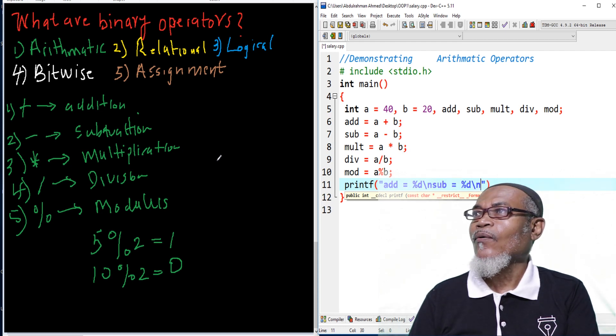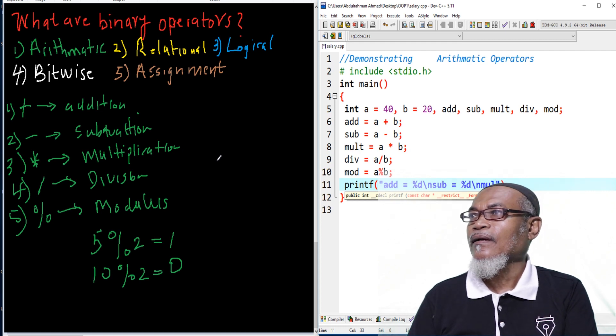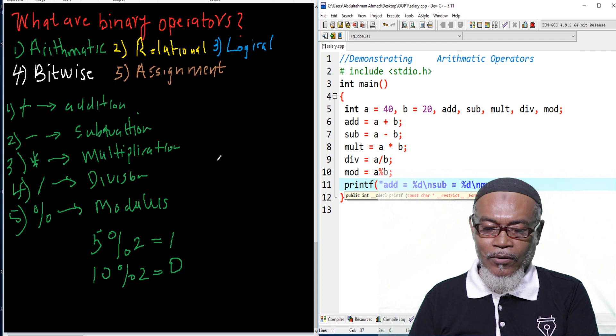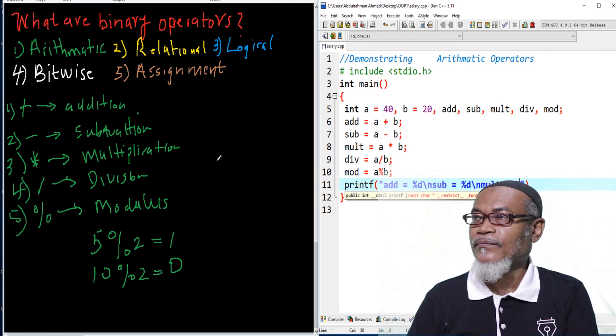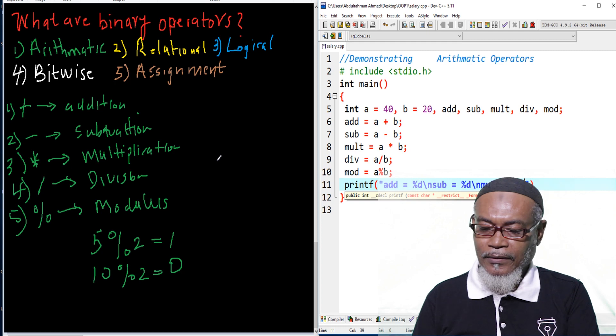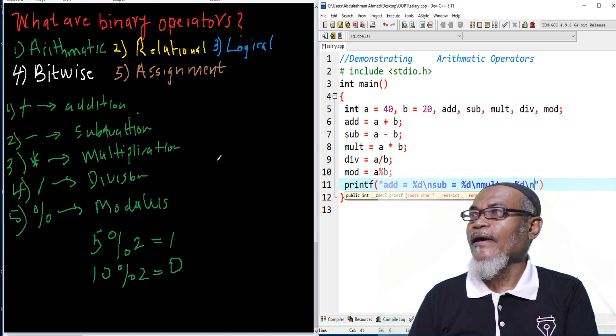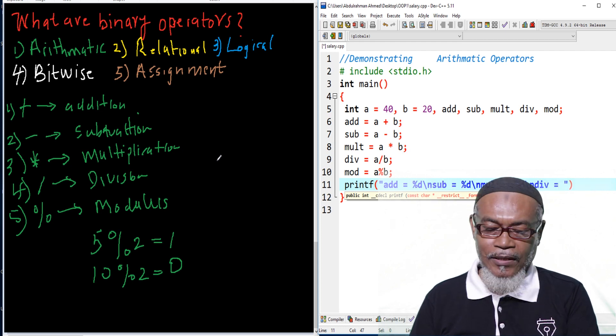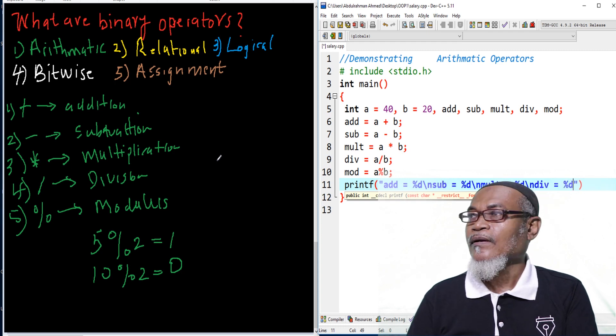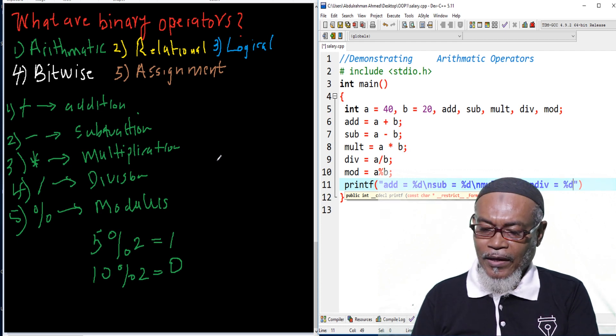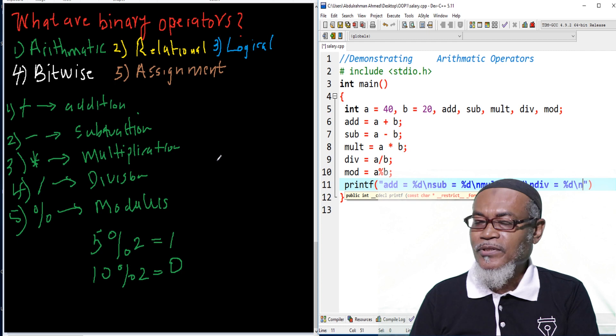And then, we're having another new line. And here now, we'll have the mult. Our mult will also have a format specifier, percentage D. And then, we'll have our escape sequence to put a new line. And then, from there, we'll have our div. Our division will be that. And then, we'll have a format specifier, percentage D.